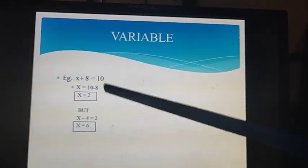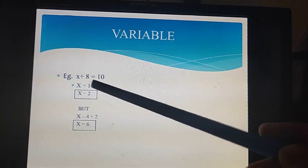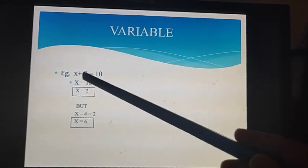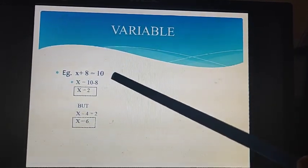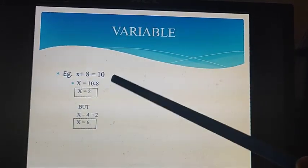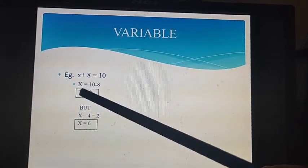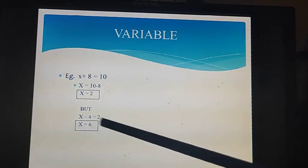Now why we call it a variable, we can clarify with this example. See, x + 8 = 10. Here if we have to find out the value of x, we can take this 8 to this side. As it is plus, it will be minus here. So it will be 10 - 8, that is 2. So here the value of x is 2.